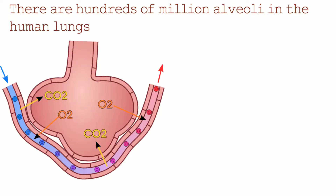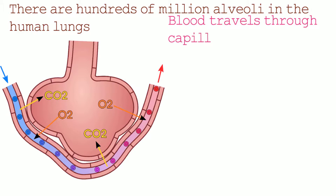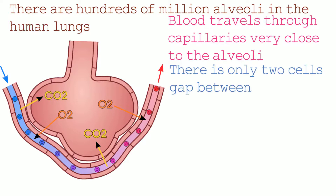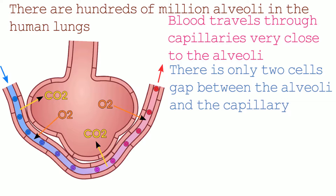Here is a 2D diagram of what the alveoli look like. Blood travels through the capillaries very close to the alveoli. There is only a two cell gap between the alveoli and the capillary. The two cells are the cells that make up the wall of the alveoli and the cells that make up the wall of the capillary. Both of these cells allow oxygen and carbon dioxide to pass through them.